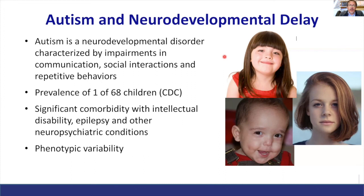I'm going to be talking about quite a bit of work we've done over the last year or so trying to understand the genetic basis of autism. I'll talk about our particular perspective in terms of actually trying to identify the genes and risk factors associated with it. Just a few comments about the disorder itself: we recognize it as a neurodevelopmental disorder with impairments in communication, social interaction, as well as repetitive behaviors.